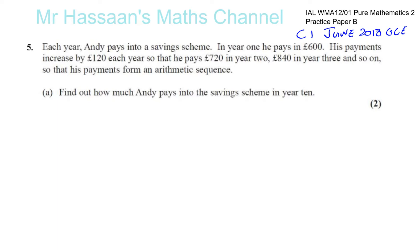Each year Andy pays into a savings scheme. In year one he pays in £600. His payments increase by £120 each year, so he pays £720 in year two, £840 in year three, and so on.